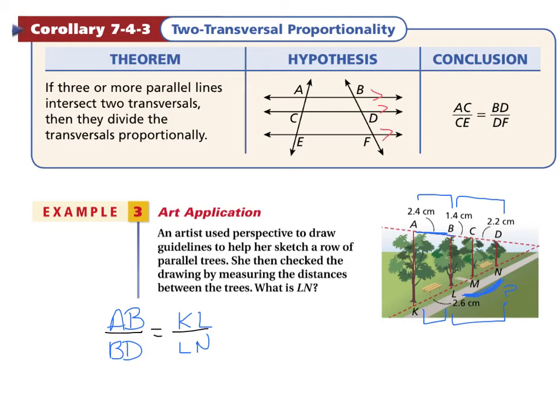Now we can plug in those values. The length of AB is 2.4. The length of BD is 2.2 plus 1.4, that gives us 3.6, equals KL which is 2.6 over LN, which is what we need to find. Once again, that could be a variable.